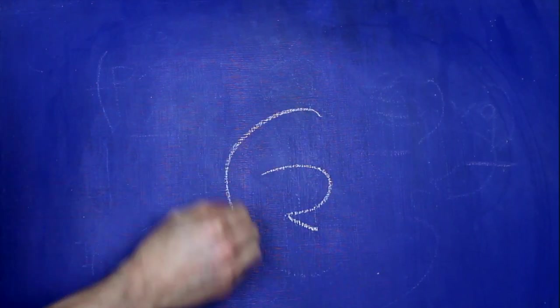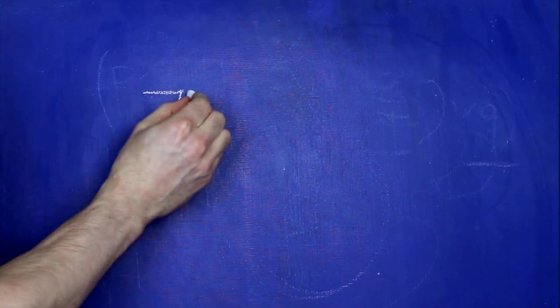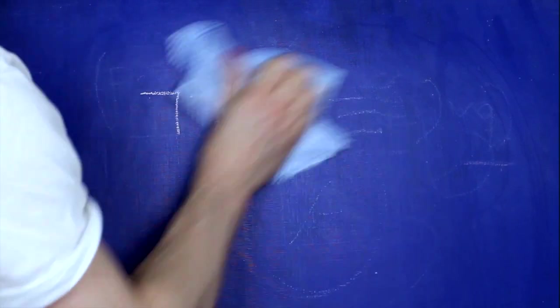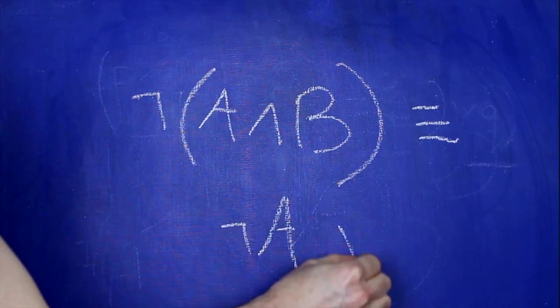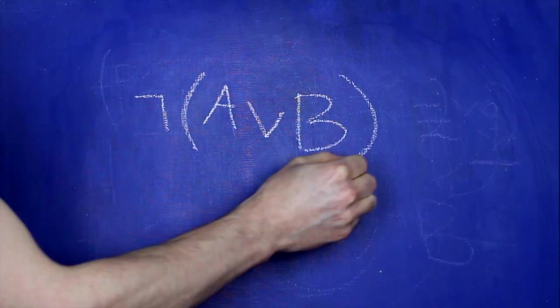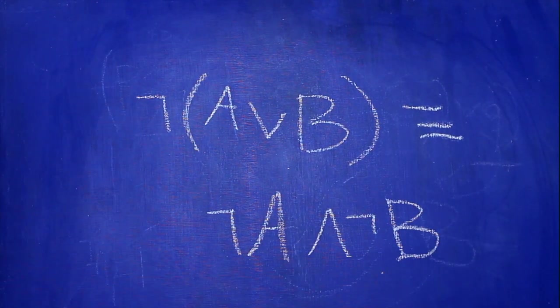Step two: we have to deal with negation symbols. We can eliminate double negations so that not not A becomes A. And we can deal with single negations using the De Morgan rules. If we get a negation in front of a conjunction, we apply this rule. If we get a negation in front of a disjunction, we apply this rule. It's really helpful to picture that in terms of syntax trees.